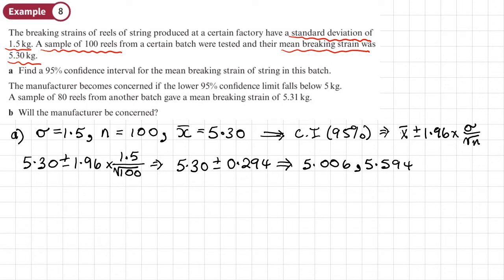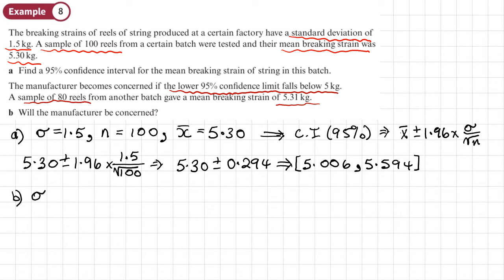That gives a lower limit of 5.006 and an upper limit of 5.594, so the confidence interval is [5.006, 5.594]. You could also write this as an inequality with the mean in the middle. Part b: the manufacturer becomes concerned if the lower 95 percent confidence limit falls below 5 kg. A sample of 80 reels from another batch gave a mean breaking strain of 5.31 kg.